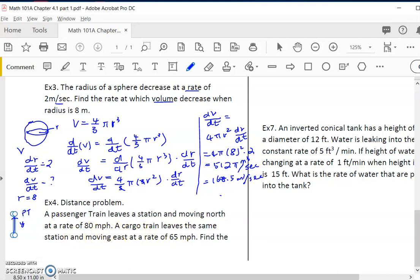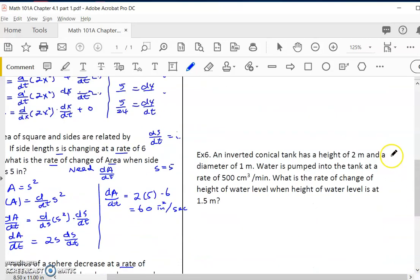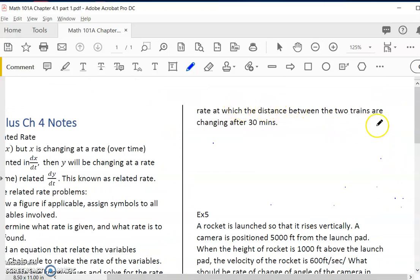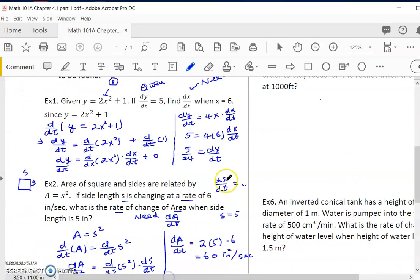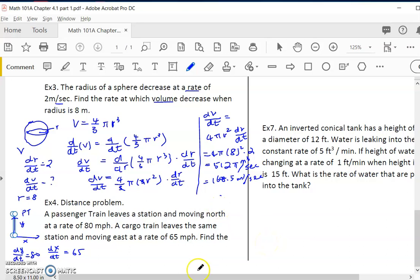A cargo train leaves the same station and moves east. We call X because it's horizontal. dy/dt is 80 whereas dx/dt is 65. Find the rate at which the distance between the two trains are changing after 30 minutes. We know X and Y are changing, we know how they're changing over time, but we want to know how far apart they are. Let's say this is S. So that means we need ds/dt equal to what - this is what the question wants us to find out.